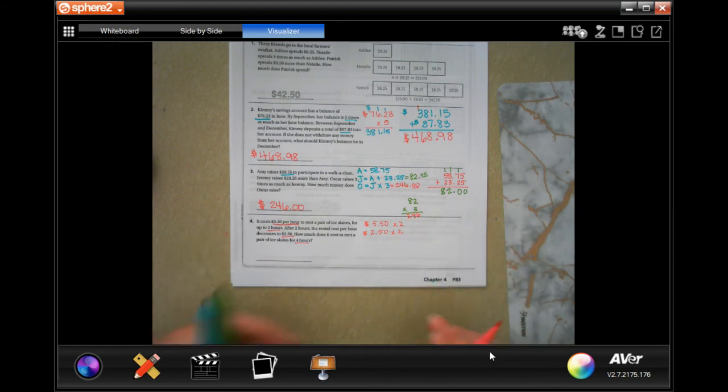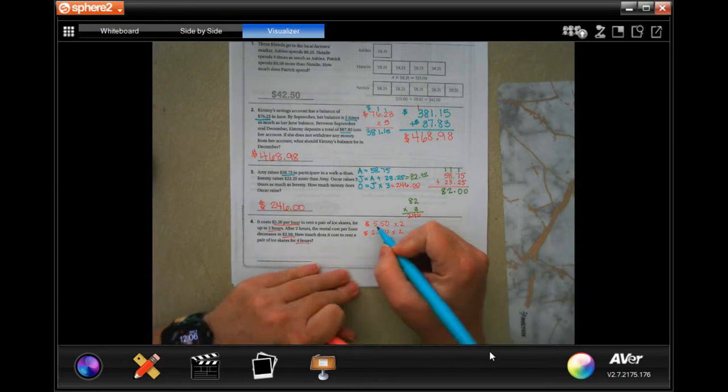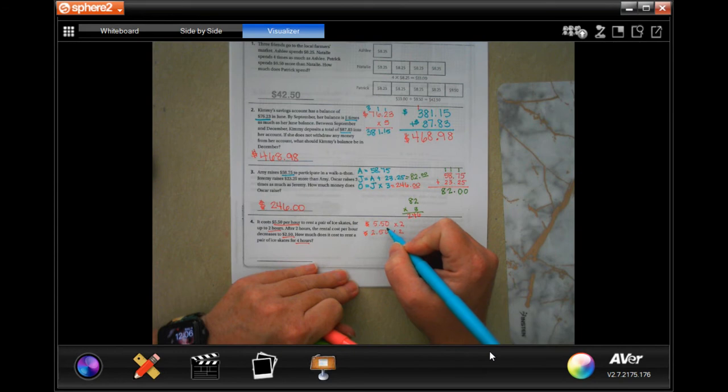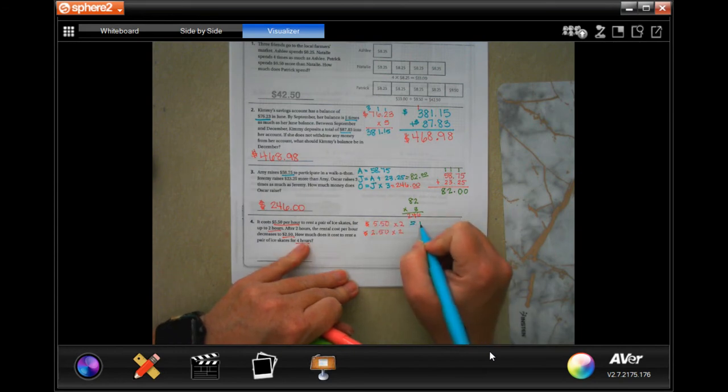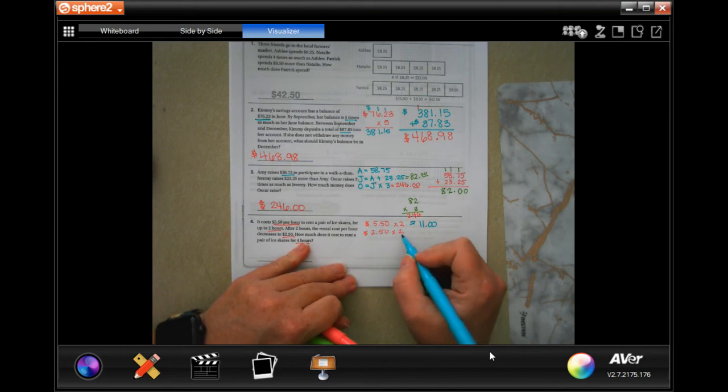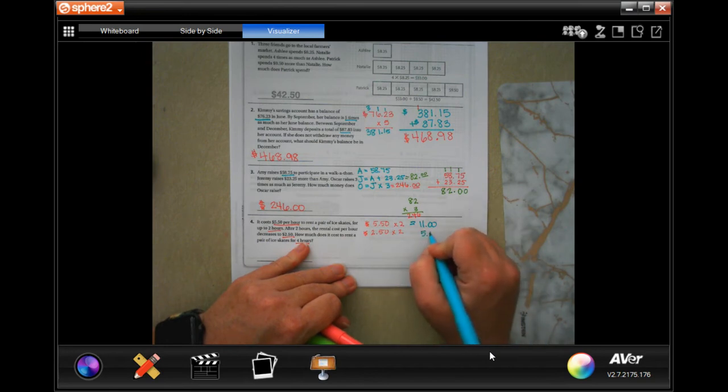We multiply these and then we need to add them up. I know that $5 and $5 is $10, and 50 cents and 50 cents is a dollar, making that $11. I also know that $2 and $2 is $4 plus 50 cents and 50 cents is going to be $5. Add those up and get $16.